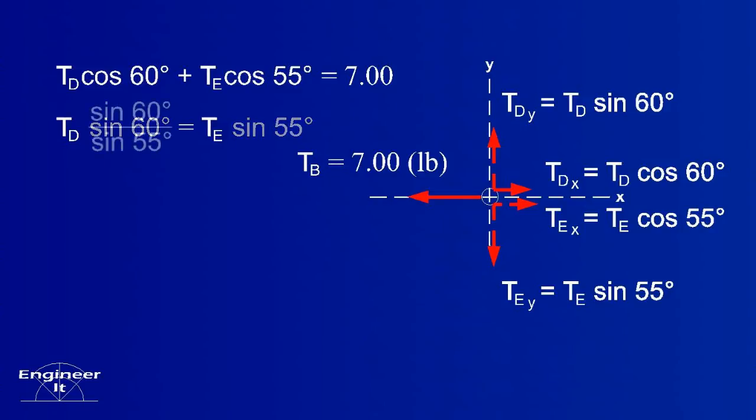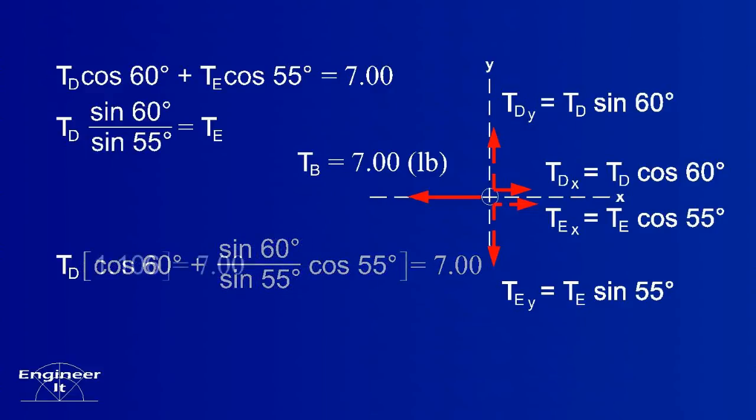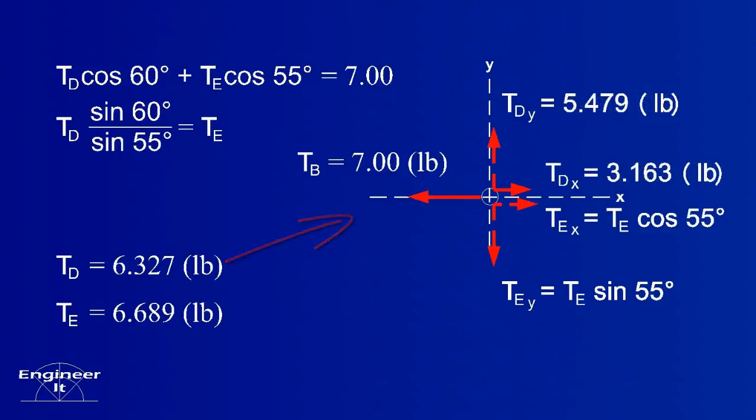Let's solve the bottom equation for tension E and substitute it into the top equation. Rearrange the terms and solve for tension D. Substitute this to solve for tension E. Now substitute tension D and tension E to solve for its vector components.